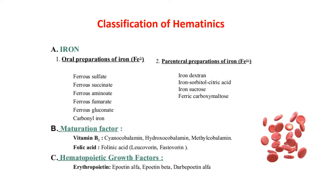Hematinics are broadly classified into three different categories. First is iron, second is the maturation factor, and third is the erythropoietic growth factor. Iron includes oral and parenteral preparations. Maturation factors include vitamin B12 and folic acid, and hematopoietic growth factors include erythropoietin.